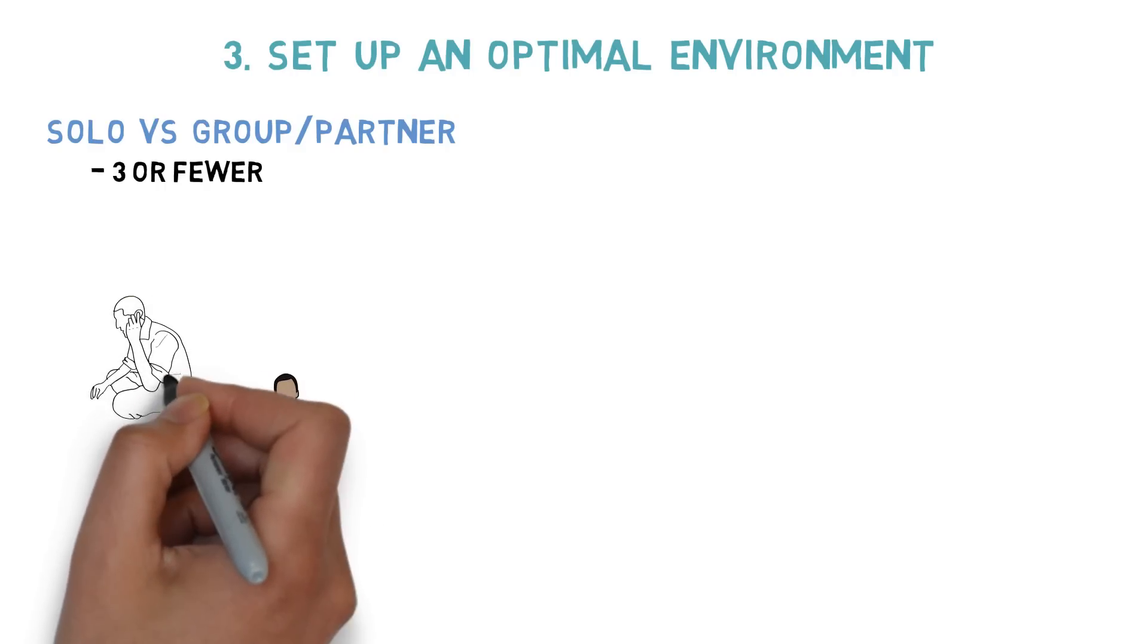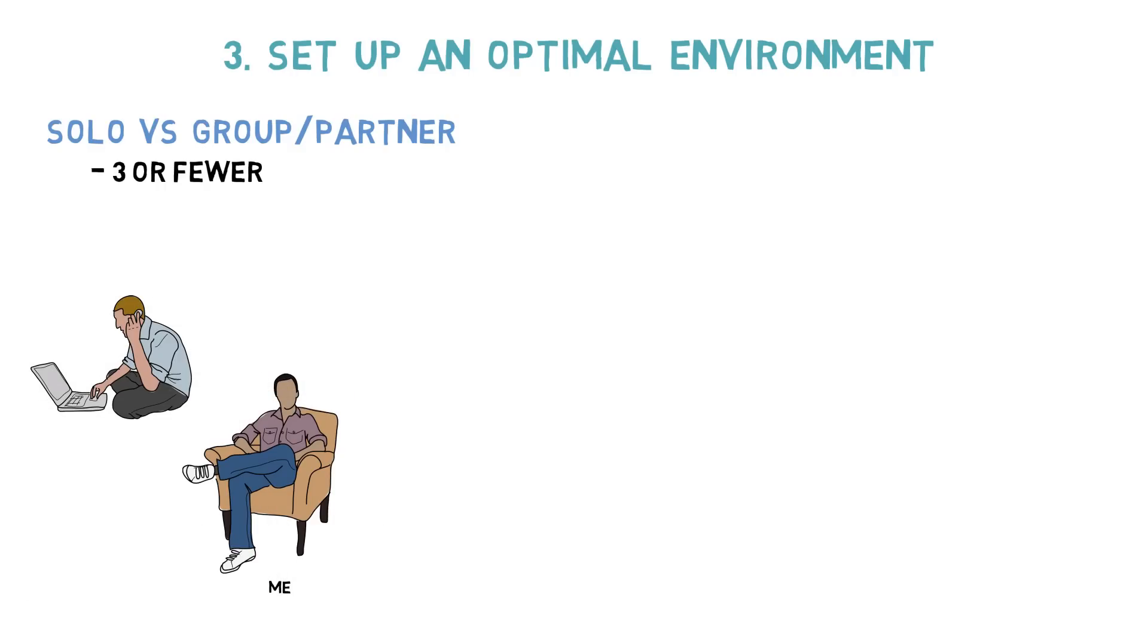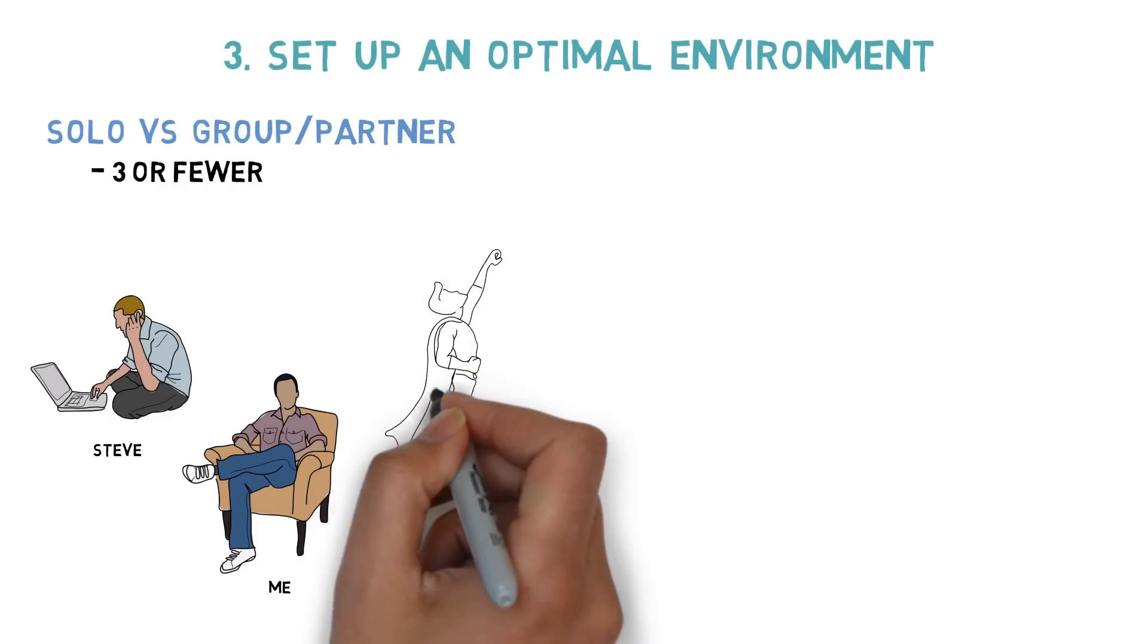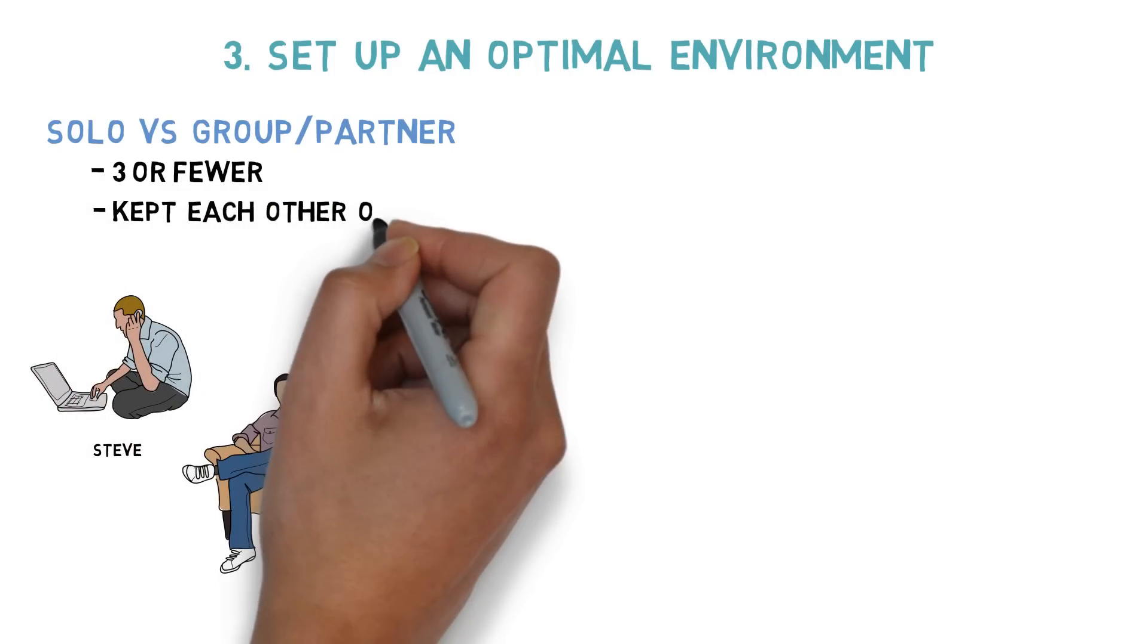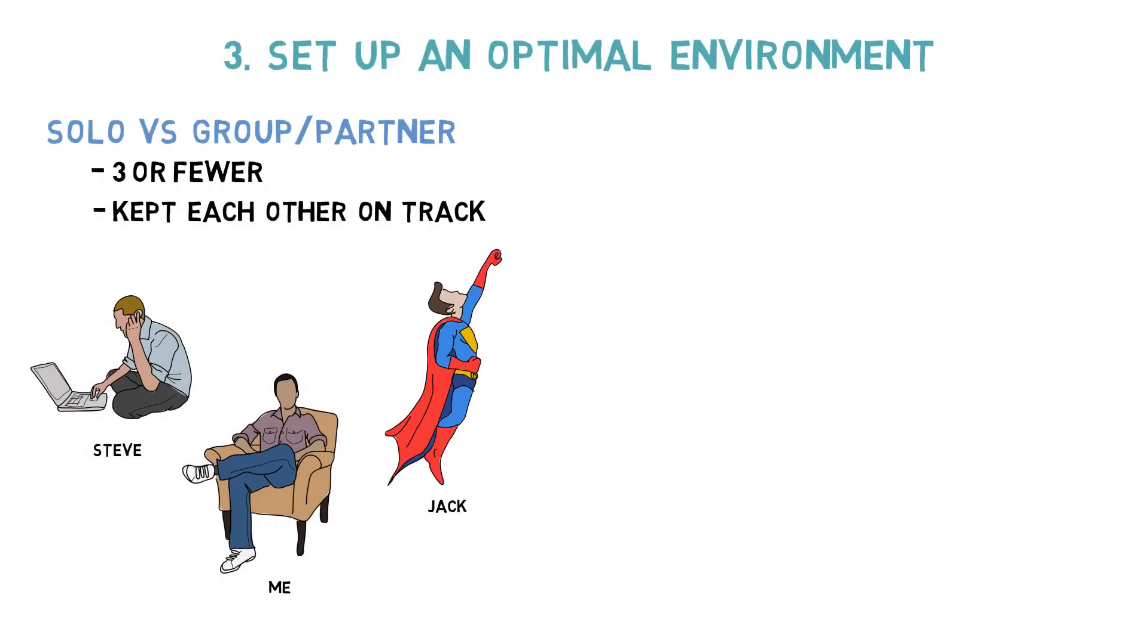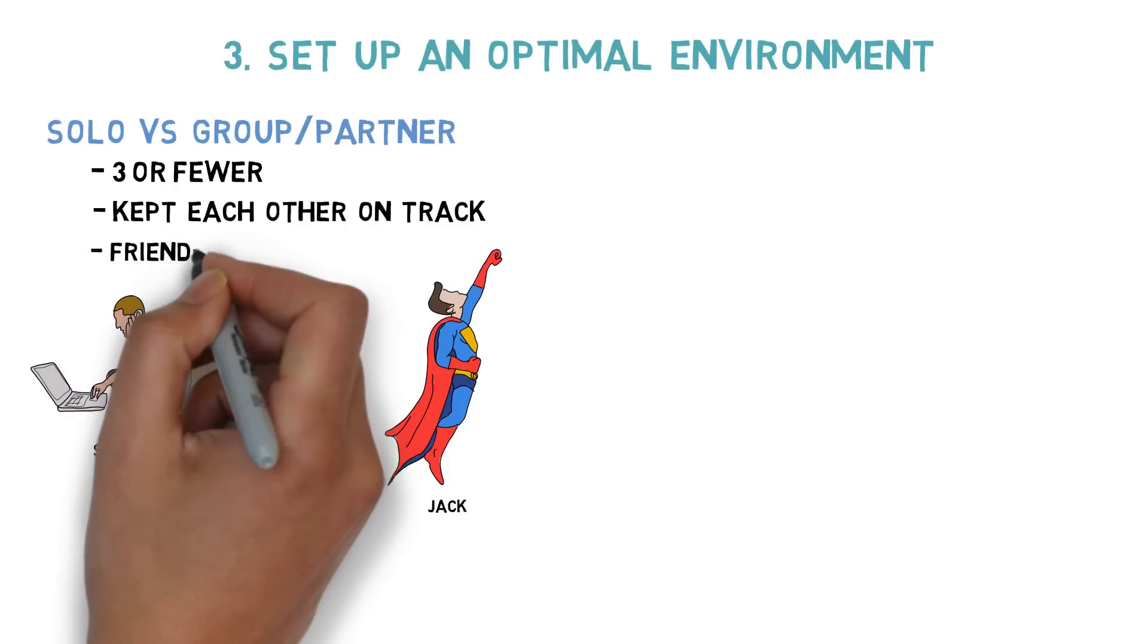I studied with two roommates who did the same prep course as me and they also set high goals using similar study strategies. They both did well, scoring in the 90 to 95th percentile range. Since we were all studying together for the same test around the same date, we were in the same boat.